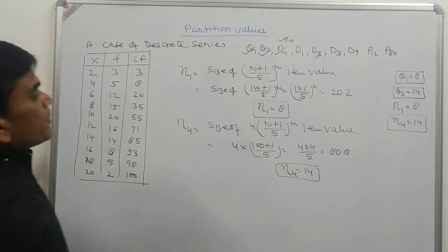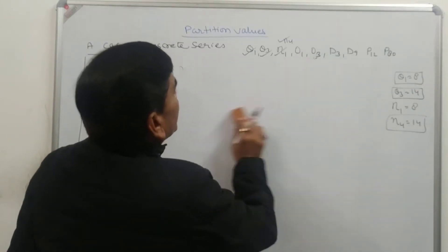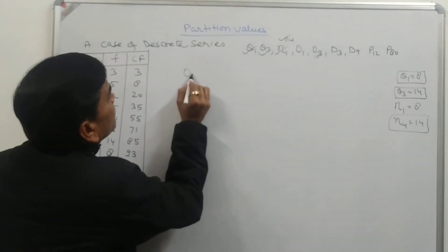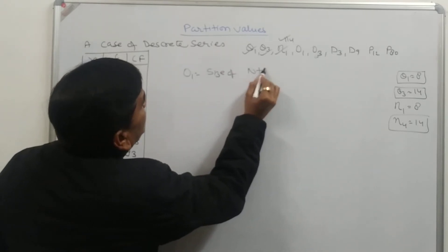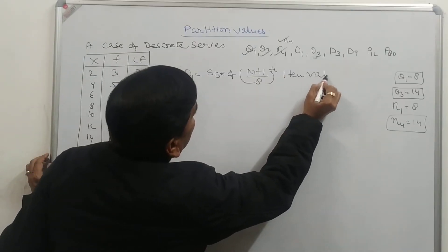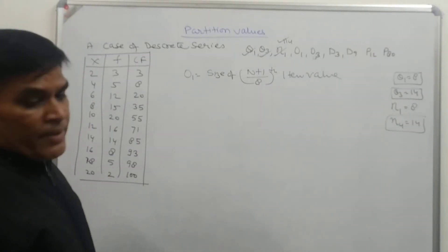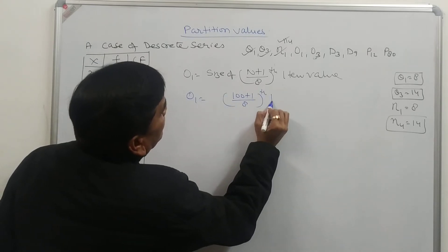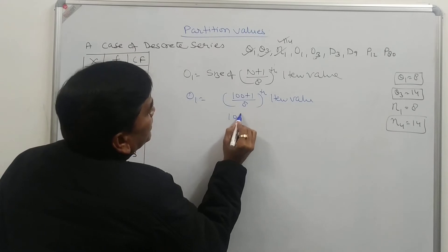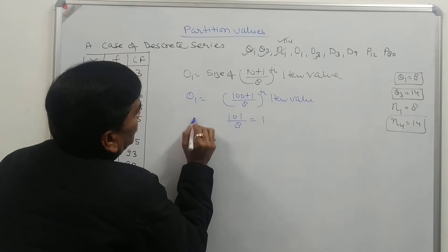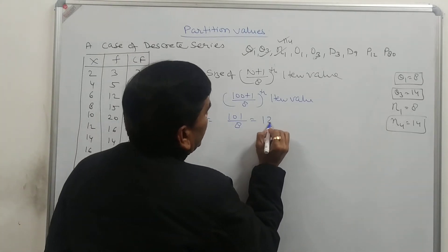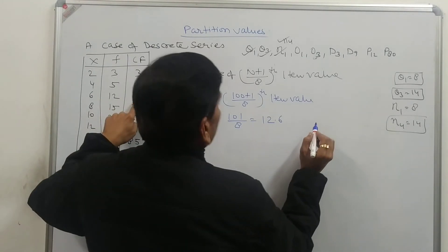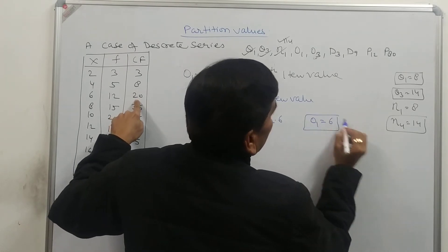Now we have to calculate octile first. Octile divides the series into 8 equal parts. So O1 is equal to the size of (N+1)/8th item value. Octile first equals (100+1)/8 = 101/8 = 12.625. 12.625 first includes in CF 20, so the value of octile 1 is equal to 6.